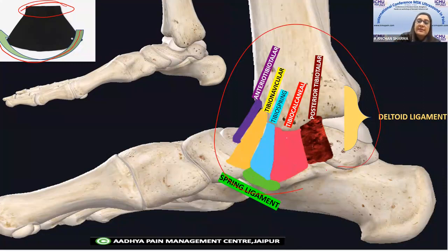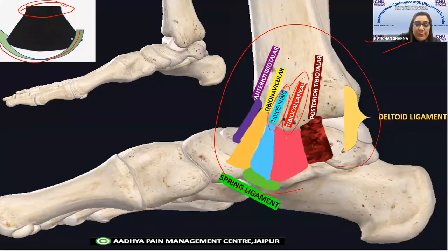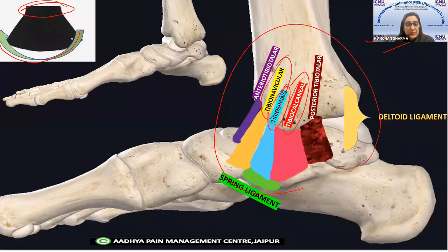The deltoid ligament has a superficial layer and a deep layer. In the superficial layer you have tibio-calcaneal, tibio-spring, and tibio-navicular — those going to the calcaneum and navicular. Those going to the talus, specifically anterior tibio-talar and posterior tibio-talar, are in the deep layer.